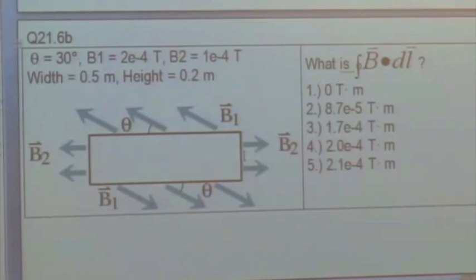On the right side of the rectangular loop, everywhere along that part of the path, the magnetic field is B2, and it's pointing directly to the right. The magnitude of B2 is 1 times 10 to the minus 4 tesla. On the top, the magnetic field is pointing at this angle. The angle from the path theta is 30 degrees, and the magnitude of B1 is 2 times 10 to the minus 4 tesla.